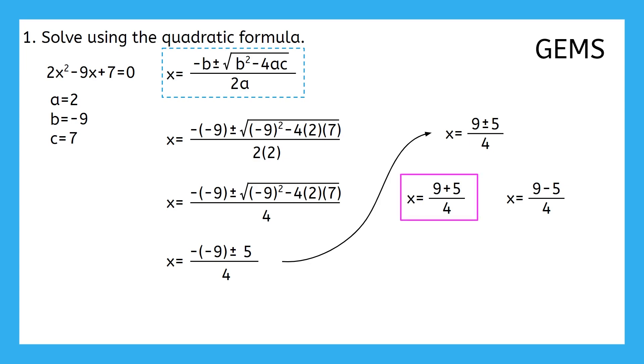For this first equation, 9 plus 5 is 14, and then we can simplify this fraction to 7 over 2. For the second equation, 9 minus 5 is 4, and 4 over 4 simplifies to 1. So there we have it. The solutions to our original equation are 7 over 2 and 1. Did you notice that this was problem number 1 on the PDF warm-up found on the cover sheet? If factored correctly, you should have gotten the same answers through factoring as we did by using the formula. Pretty cool, huh? Let's try another one.